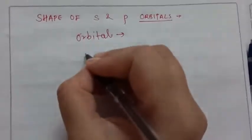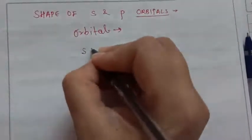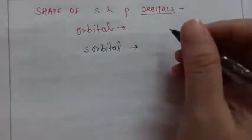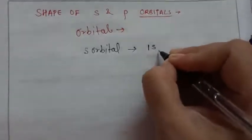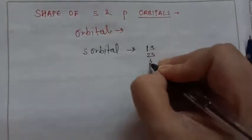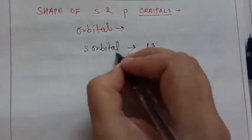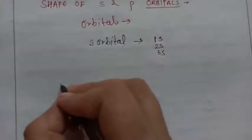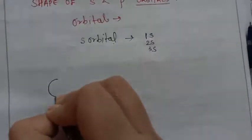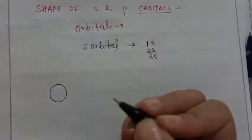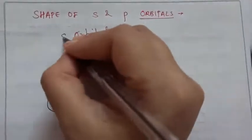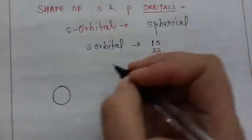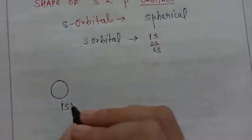So as I taught you in the previous videos, S orbital has only how many subshells? One subshell like 1s, 2s, 3s. The S orbital has only one subshell. So if we draw the diagram of 1s, the shape of S orbital is said to be spherical. So this is 1s orbital.